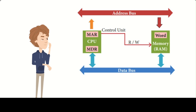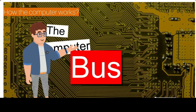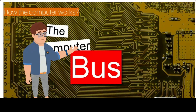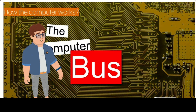So why is the data bus so important in modern computer systems? The data bus is what allows different components of a computer system to work together seamlessly. For example, the CPU uses the data bus to communicate with the RAM and similarly with other components, ensuring that data is processed quickly and accurately. In conclusion, the data bus is an essential component of modern computer systems, allowing different components to communicate and ensuring that data is transferred quickly and accurately.